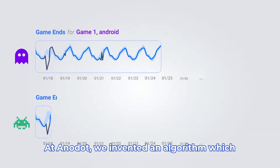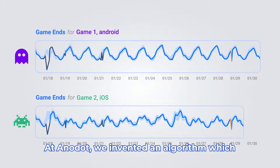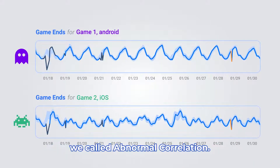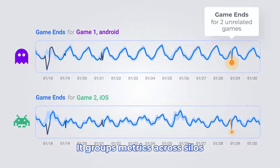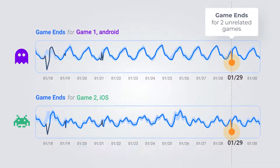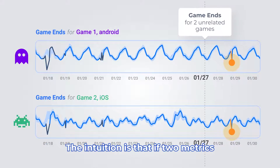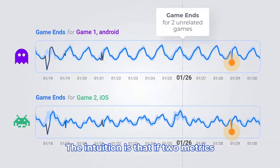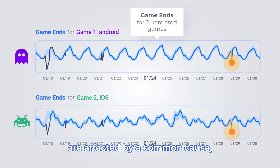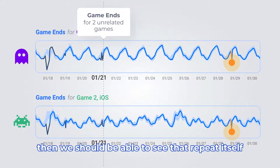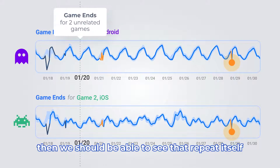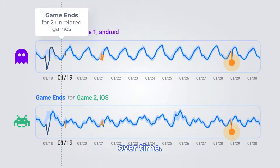At Anodot, we invented an algorithm which we called abnormal correlations. It groups metrics across silos based on whether they behave abnormally at similar times. The intuition is that if two metrics are affected by a common cause, then we should be able to see that repeat itself over time.